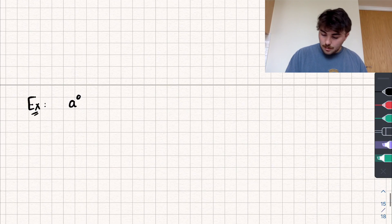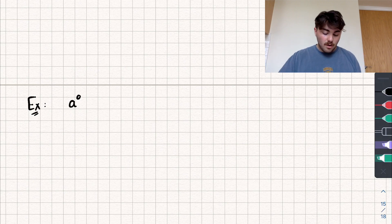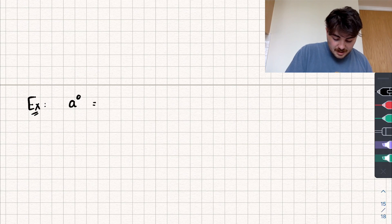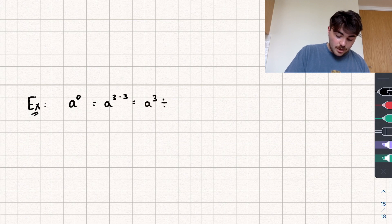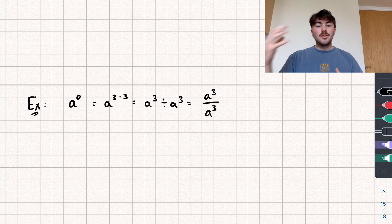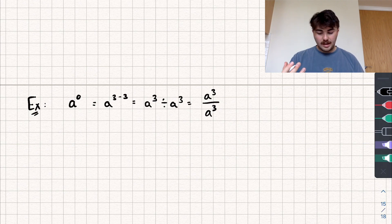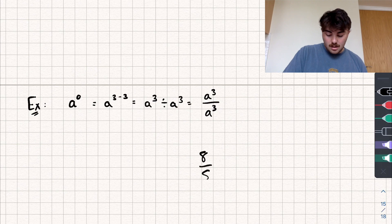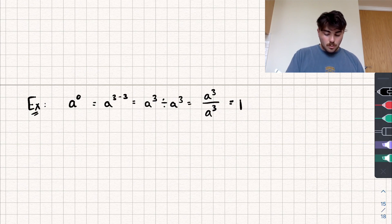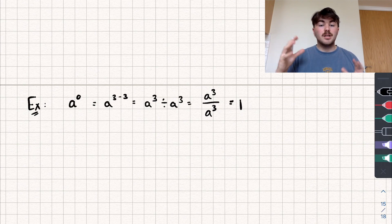Let's look at a to the power of zero. We can express this as a to the power of three minus three, which equals a cubed divided by a cubed. Any fraction where the numerator equals the denominator equals one — for example, eight over eight is one. So a to the power of zero, or any number to the power of zero, always equals one.